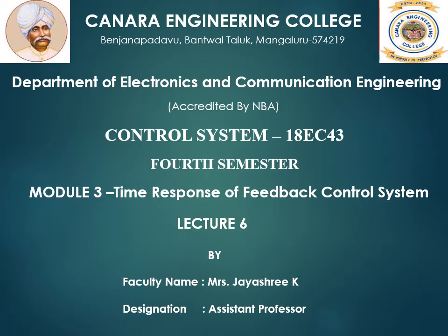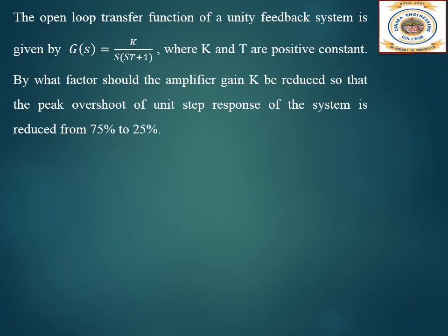Welcome to lecture 6 of module 3: time response of feedback control systems. In this lecture we will work on more numericals to find steady state constants, time response specifications, and steady state error. The question gives an open loop transfer function of a unity feedback system: G(s) = K / [s(sT+1)], where K and T are positive constants. By what factor should amplifier gain K be reduced so that the peak overshoot of the unit step response is reduced from 75% to 25%?